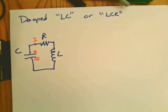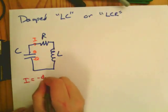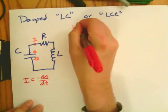So now we have energy loss to the resistor. So we expect that the oscillation will be damped. We want to write down, again, with the same definition of current, we want to write down Kirchhoff's voltage law.